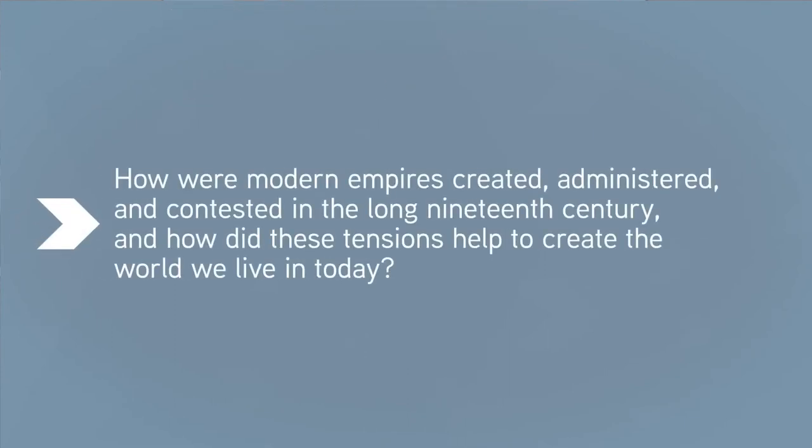How were modern empires created, administered, and contested in the long 19th century? And how did these tensions help create the world we live in today? To find answers, we have to look into the histories of the colonies themselves. For people living in the colonies, empire destroyed old local systems and replaced them with new foreign ones, disregarding the needs of local people in favor of the desires of the colonizers.